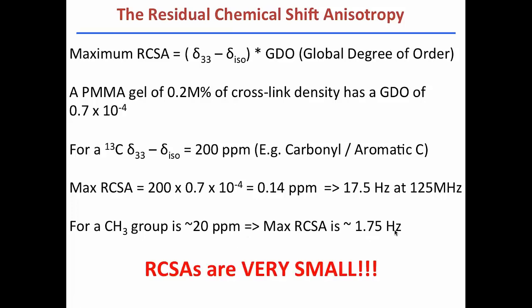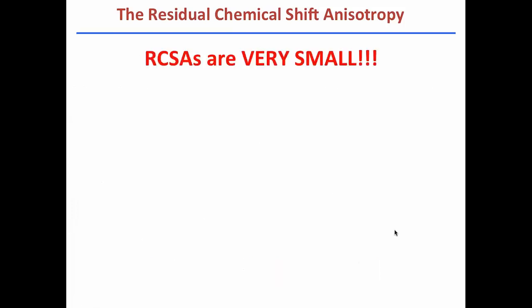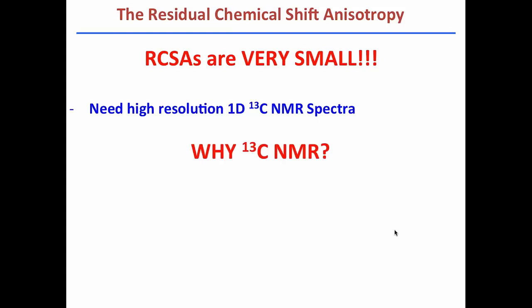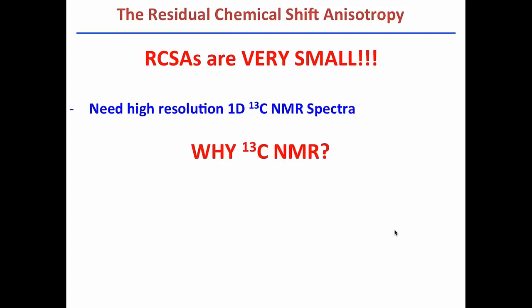The conclusion is that RCSAs are very small. And since RCSAs are very small, we need to measure them in high resolution mode. So the only way right now to do it is we need to run a 1D carbon-13 spectrum, where we have a good resolution in Hertz per point in order to work in ranges of 0 to 100 ppm.